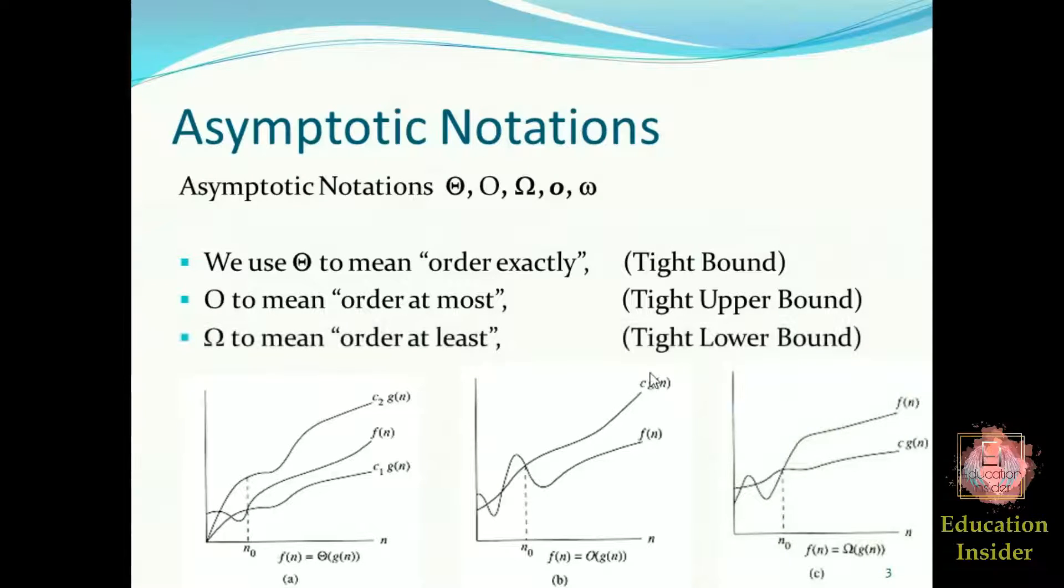The Big Omega notation: just as Big O notation provides an asymptotic upper bound on a function, Big Omega notation provides an asymptotic lower bound. It bounds a function only from bottom, and we can say this notation is a tight lower bound.